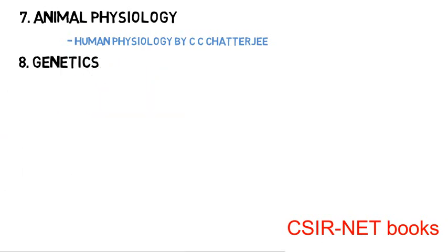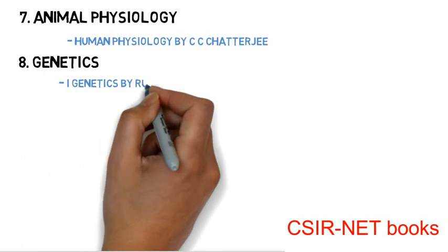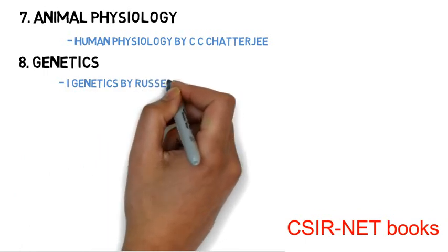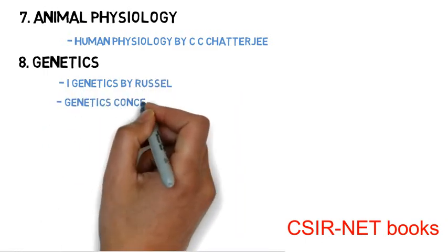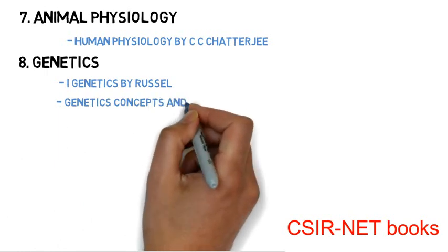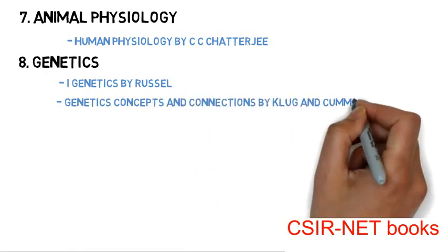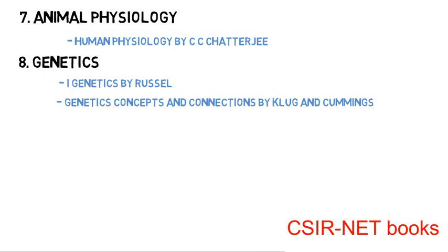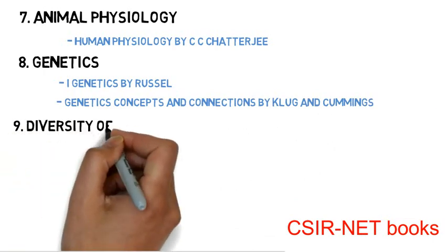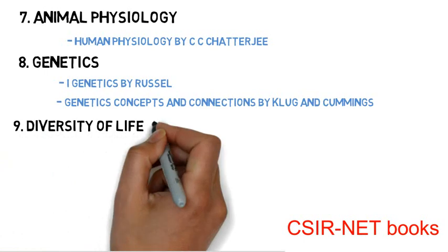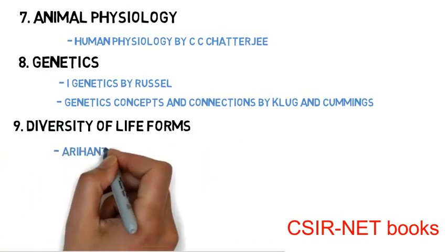For the eighth subject, that is genetics, you have to read Genetics written by Russell, and the second book, Genetics: Concepts and Connections by Clark and Cummings.